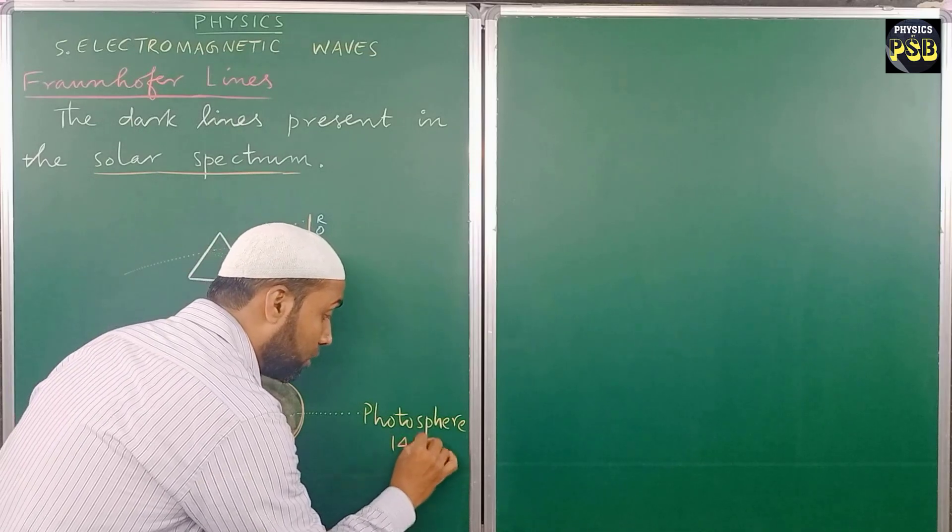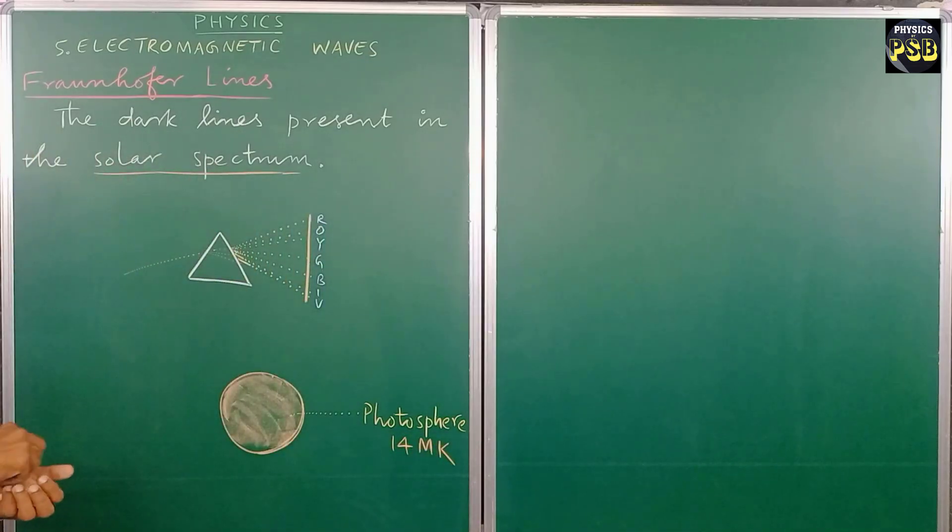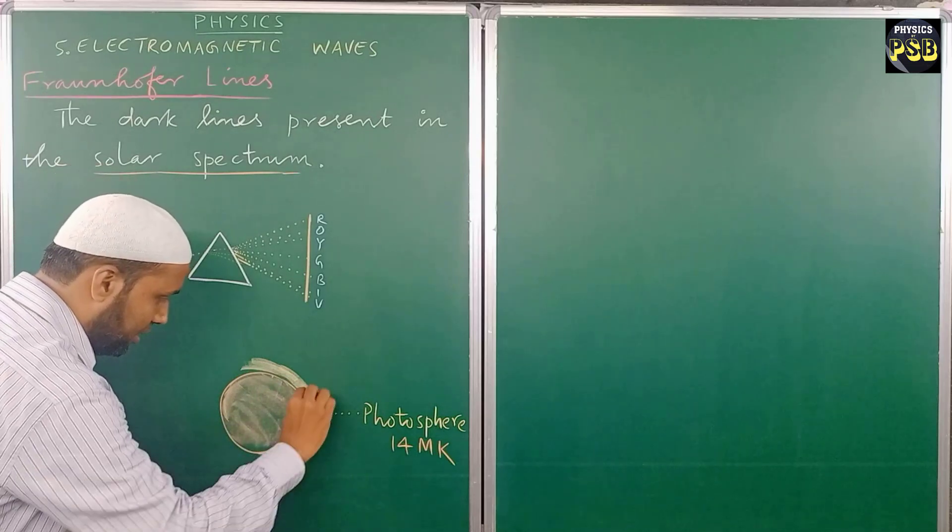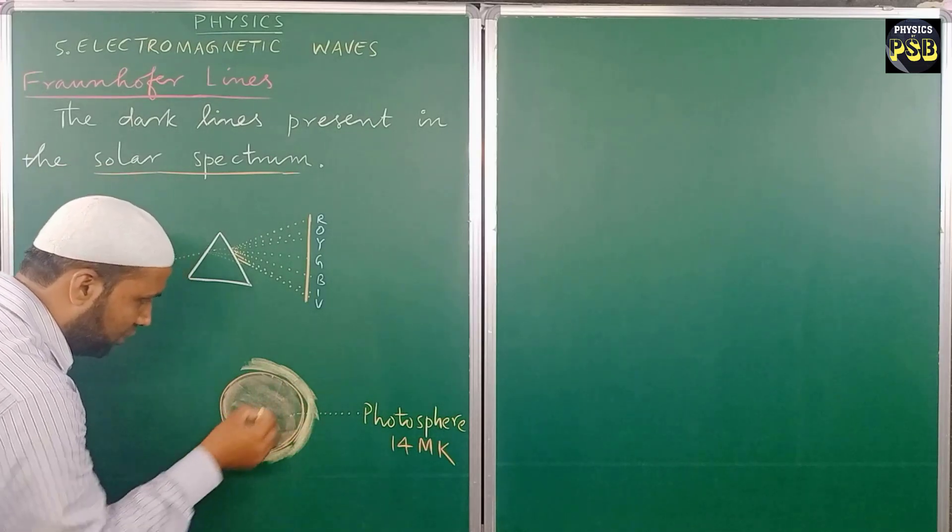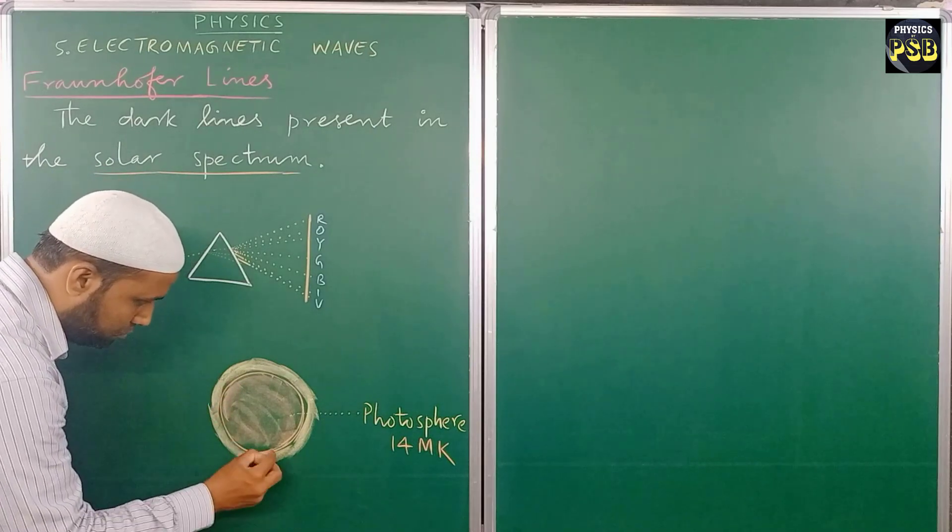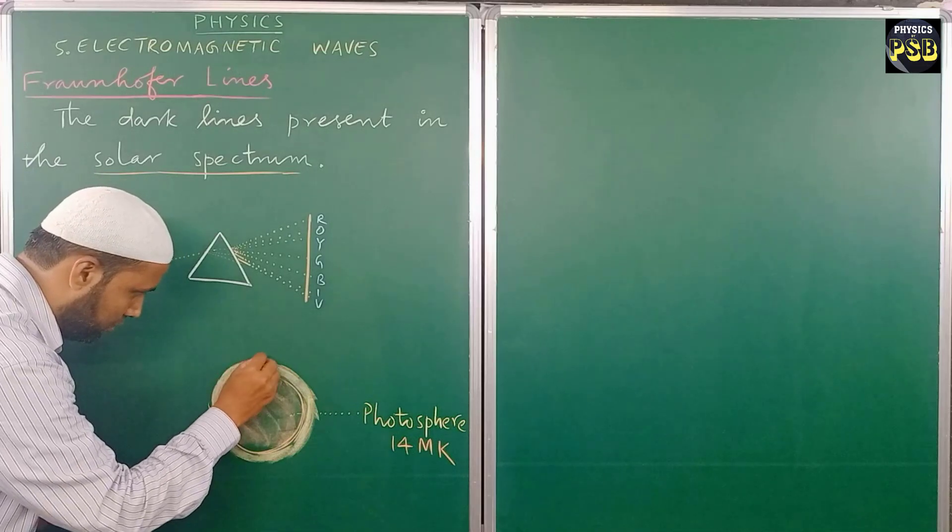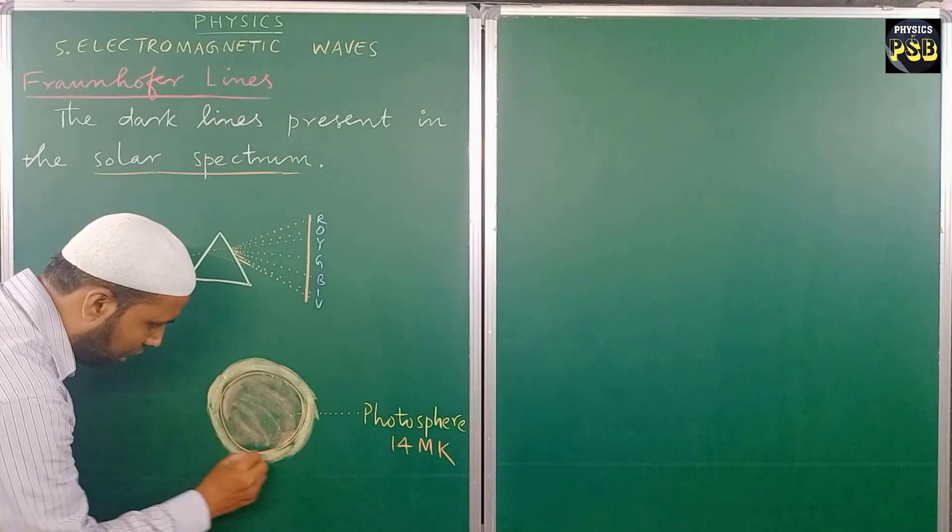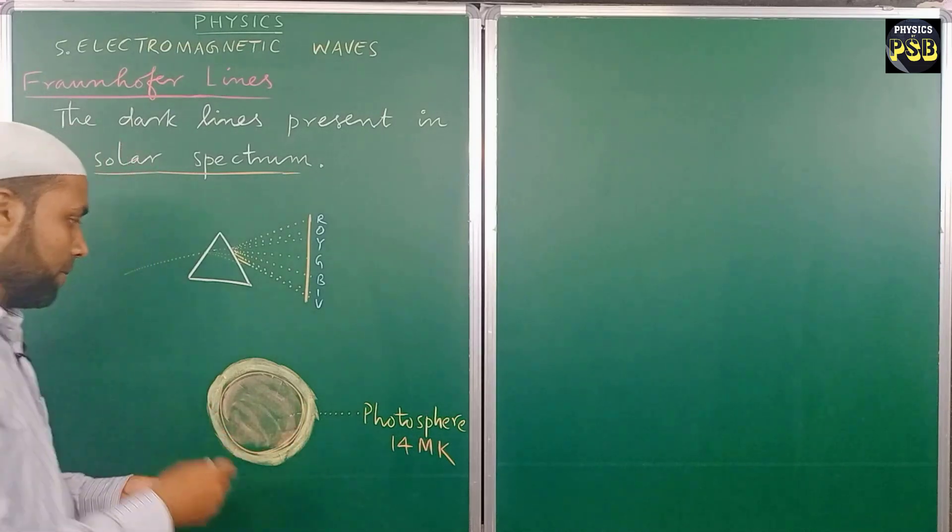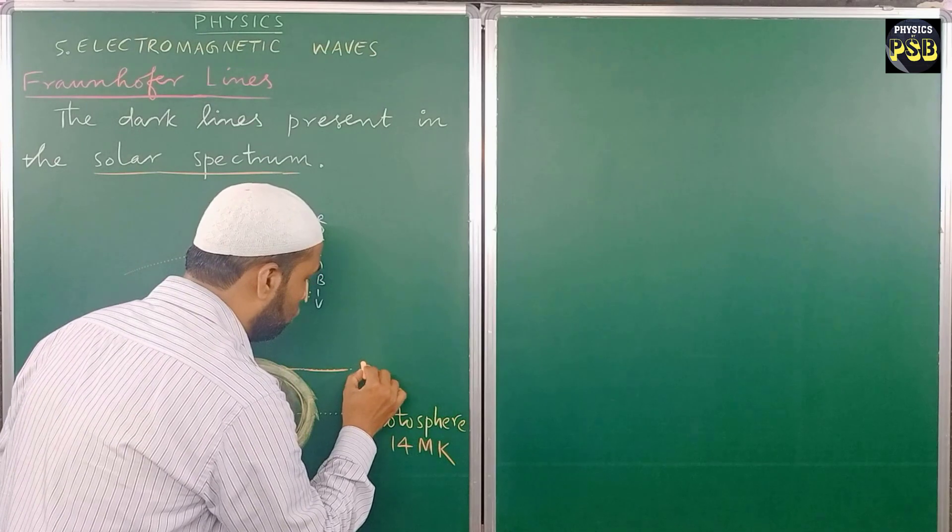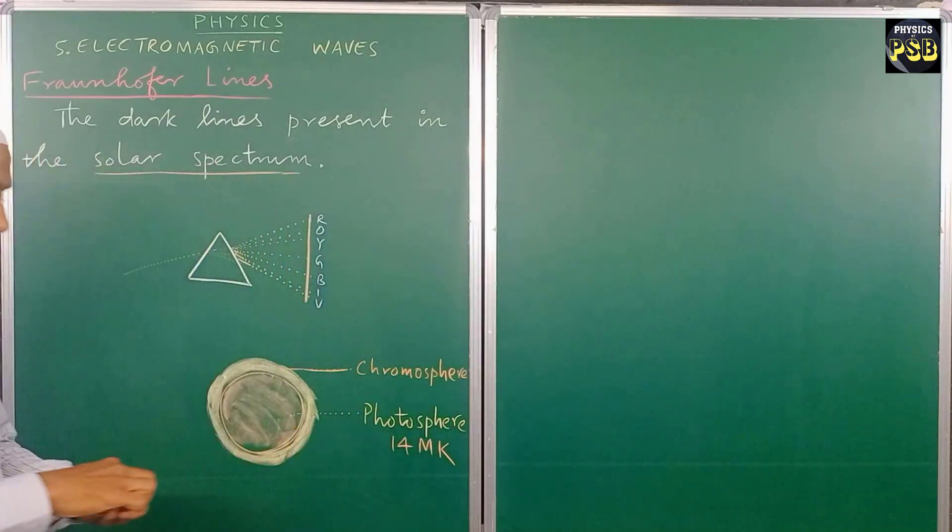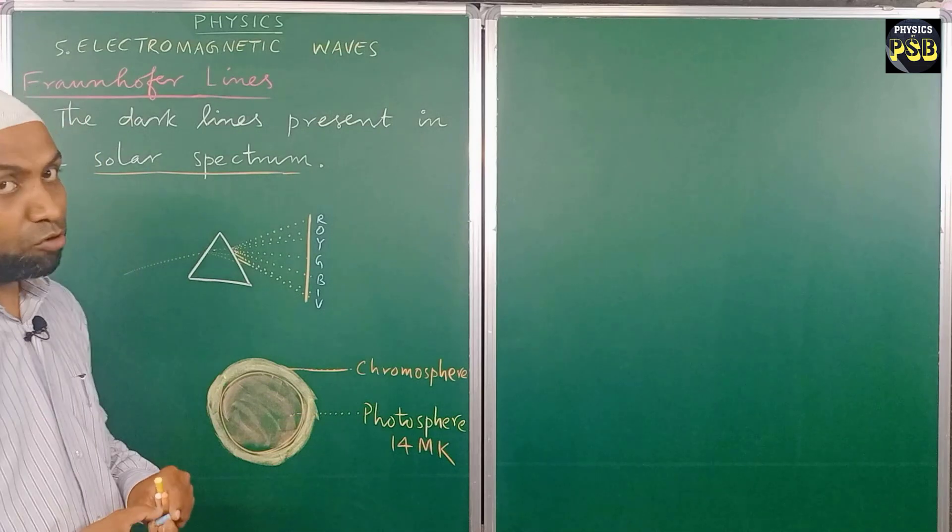It is surrounded by another layer. This layer is referred to as the atmosphere of the sun. This layer which is present around the core is referred to as chromosphere.